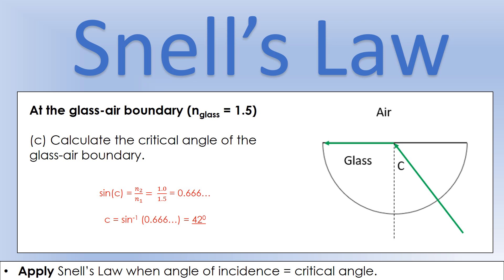We found sine c is 0.66, so therefore c is the inverse sine of 0.66, which comes out as 42 degrees. This would match up with an experiment you would do, where you'd usually get a value somewhere between 40 and 45 as the critical angle for glass. That concludes this video looking at three different scenarios where we would apply Snell's law.